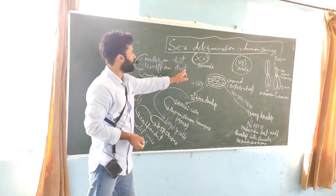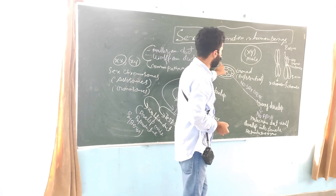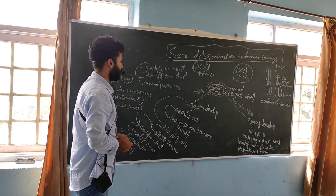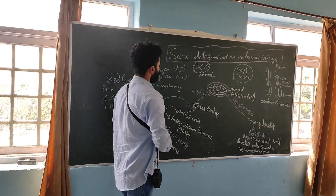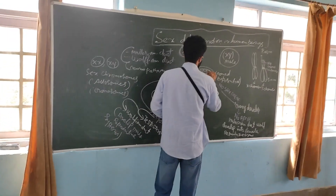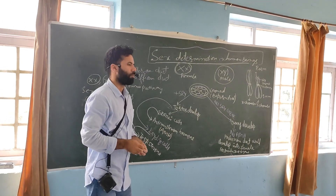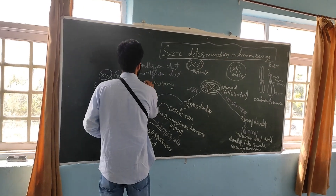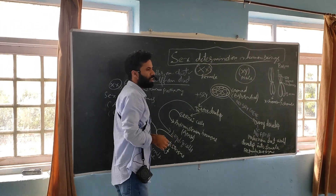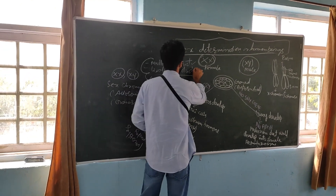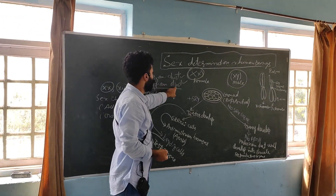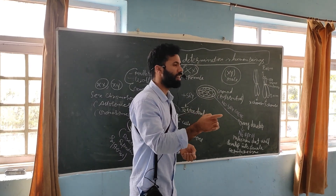If the combination is XX, then it will develop into female. And if the combination is XY, it will develop into male. During embryonic development, when a child is in the embryonic stage, there are two ducts: one duct is called the Mullerian duct and another duct is called the Wolfian duct.